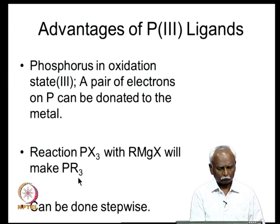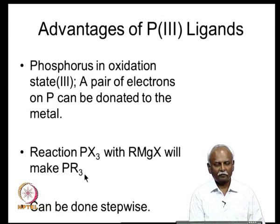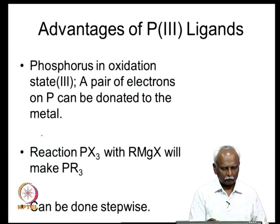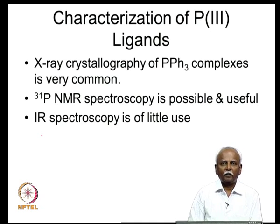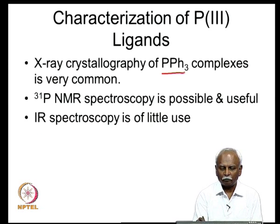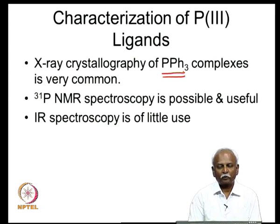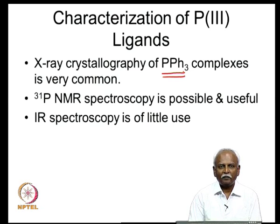These PR₃ molecules can also be further varied — you can change the R group to R1, R2, R3, and this synthesis is relatively easy because it can be done in a stepwise fashion. Another great advantage of phosphorous(III) ligands is that X-ray crystallography of PPh₃ complexes becomes very easy because of supramolecular interactions in triphenylphosphine. Whenever you have PPh₃ as an ancillary ligand, the organometallic complex is easy to crystallize, and one can study the solid-state structure very readily and accurately.